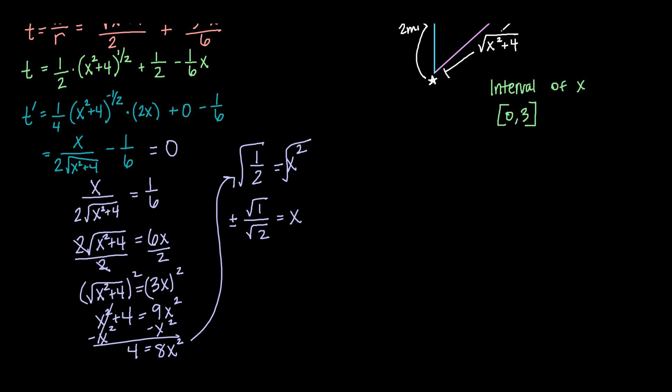Now our interval is zero to three, so we're not going to use the negative version here. And we know that the square root of one is one. And we also might want to go ahead and rationalize that. So if I multiply that by root two over root two, I get a critical point of square root of two over two.